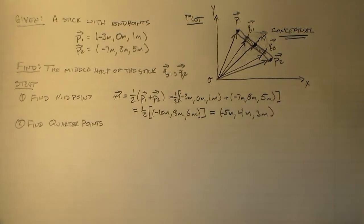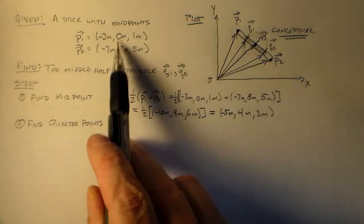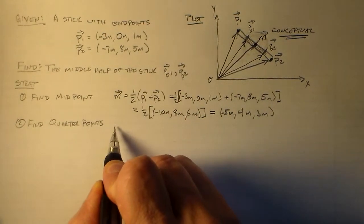Here we go. We have minus five meters, four meters, and three meters. So that's our midpoint right in between these two points.